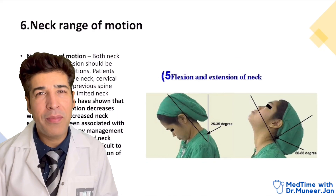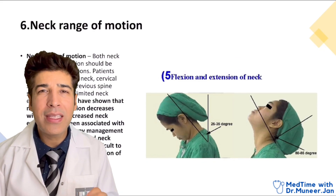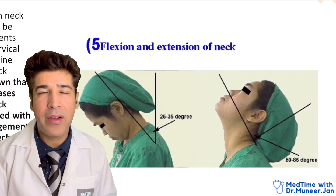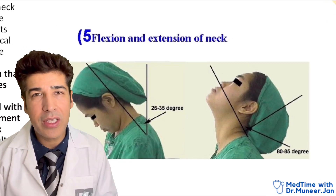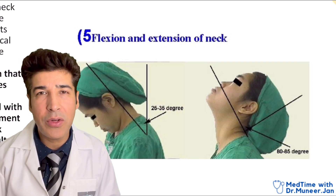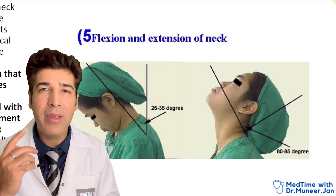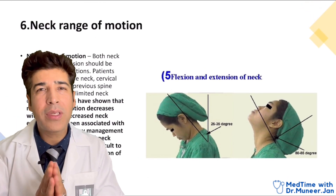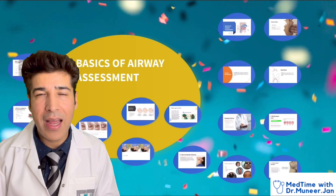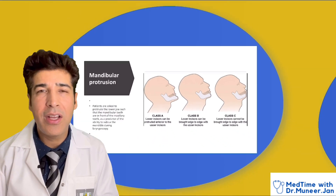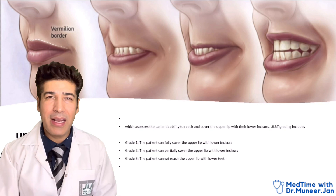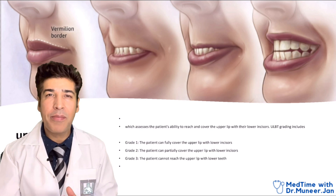Neck range of motion is also important to assess. Proper positioning before endotracheal intubation involves flexion at the neck and extension at the atlanto-occipital joint — the sniffing position. If there is a problem with neck extension or flexion, difficulty can happen during endotracheal tube intubation as well as mask ventilation.